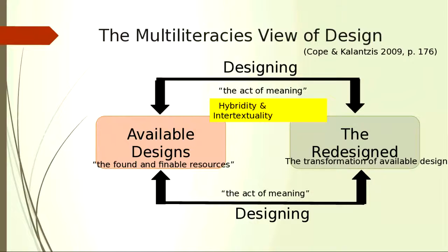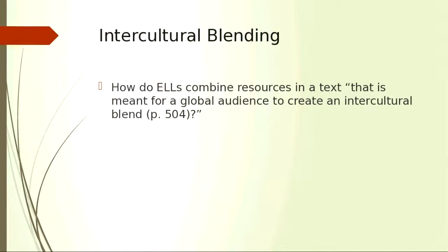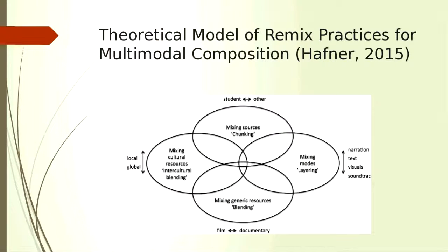During this process, there will be a lot of hybridity and intertextuality, because we are not only using one thing to represent another — we are combining many different resources to make something probably different. For intercultural blending, I'm using Hafner's definition from his 2015 theoretical model of remix practice for multimodal composition, which means how we combine resources in a text meant for a global audience to create an intercultural blend — mixing different cultural resources together to create a bridge to reach out to a global audience.